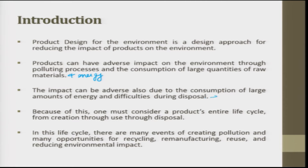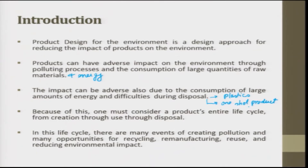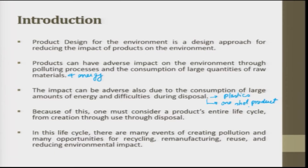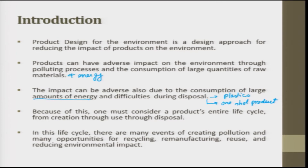For example, plastic chairs today are economical and well accepted because they are one-shot products — from the pellet to the final chair done in one shot injection molding — whereas the same chair made from wood or steel requires several processes to get the same output. As far as the customer is concerned, he only needs a product for sitting, whether it is made of metal, ceramic, plastic, or steel. So keep the customer in picture, consider the cost, and look for a material that can be quickly processed. That is what is told about energy and difficulties during disposal.